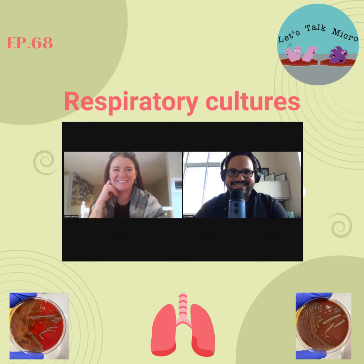A BAL — broncho-alveolar lavage — is collected by going down during a bronchoscope procedure and flushing saline through the tiny alveolar spaces to collect a specimen. A bronchial wash is slightly different, sampling from larger lung spaces. In the lab it's not possible to tell a bronchial wash from a BAL just by looking — they both look like a lot of saline in a sterile container, so proper labeling is critical.